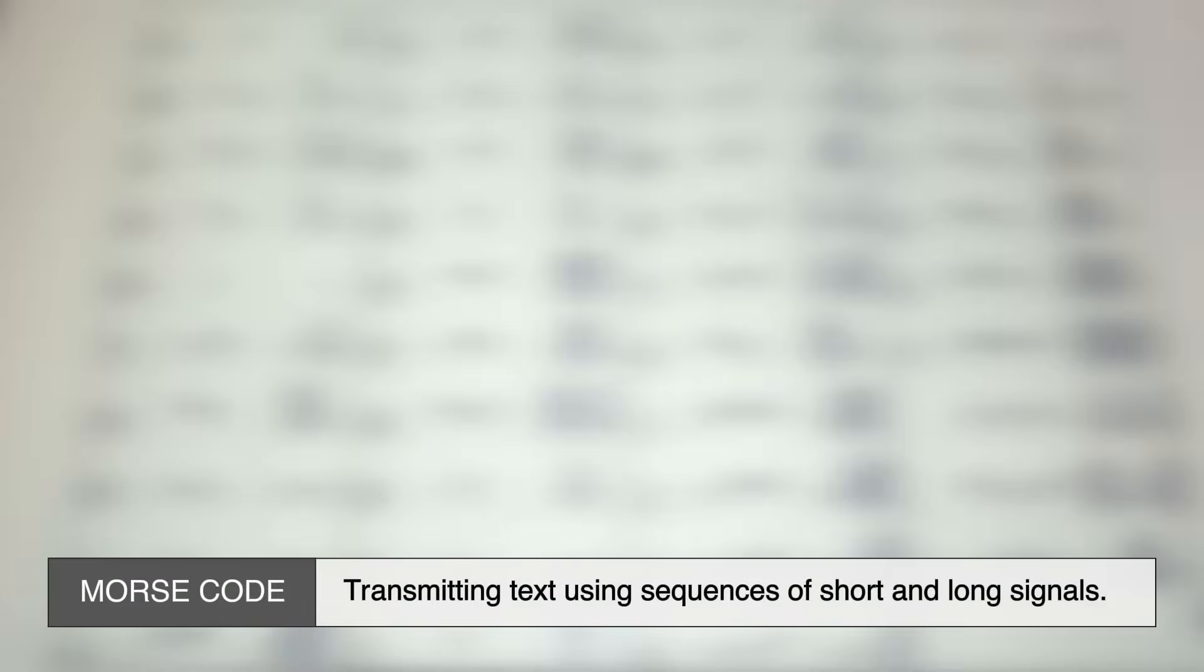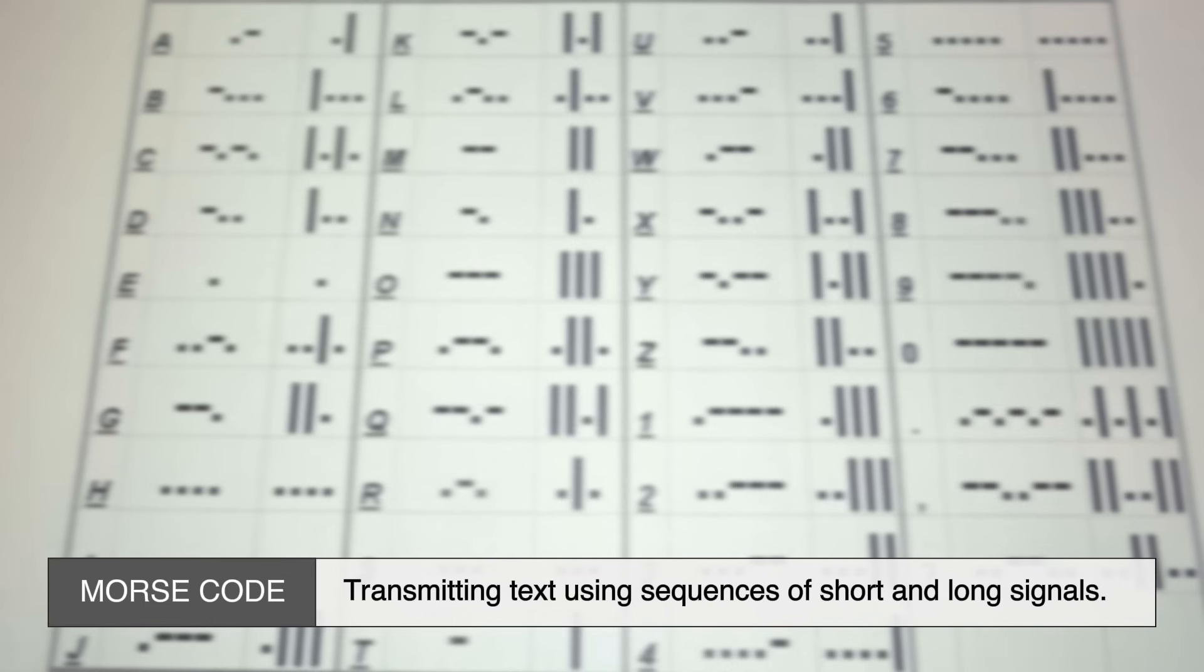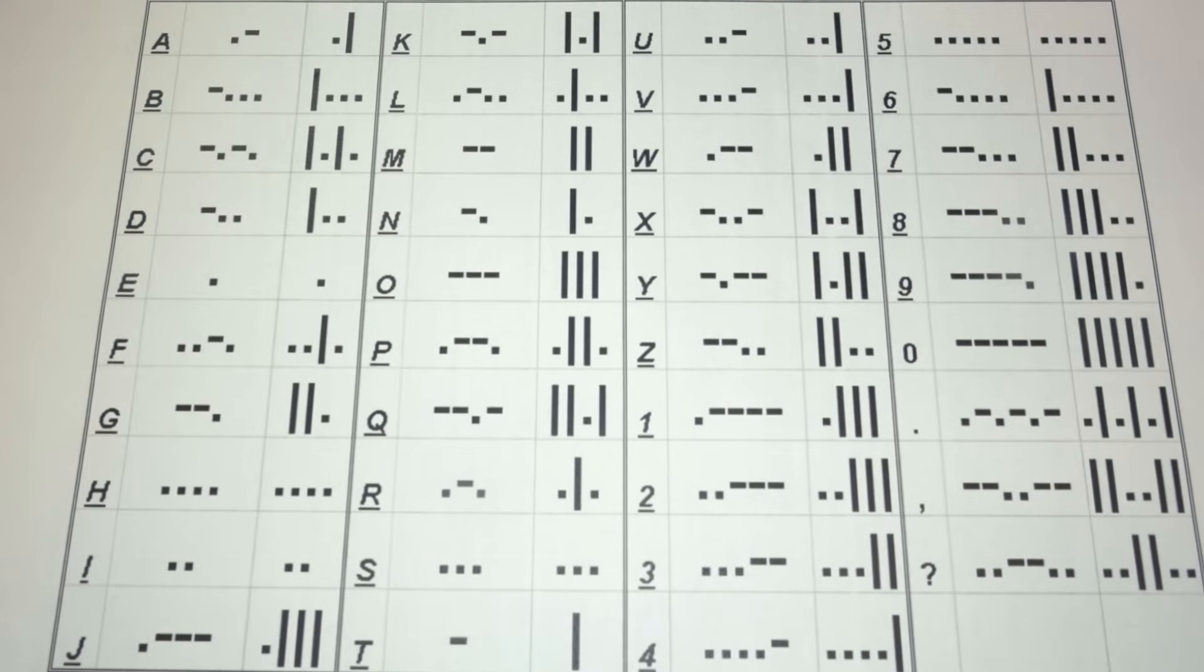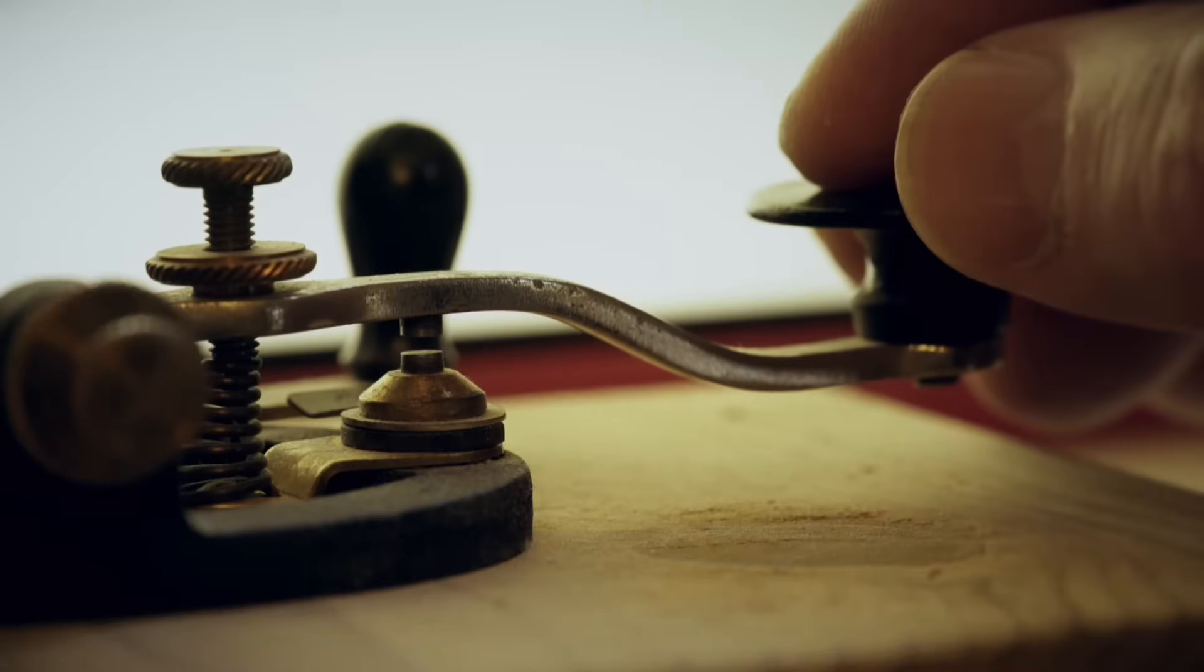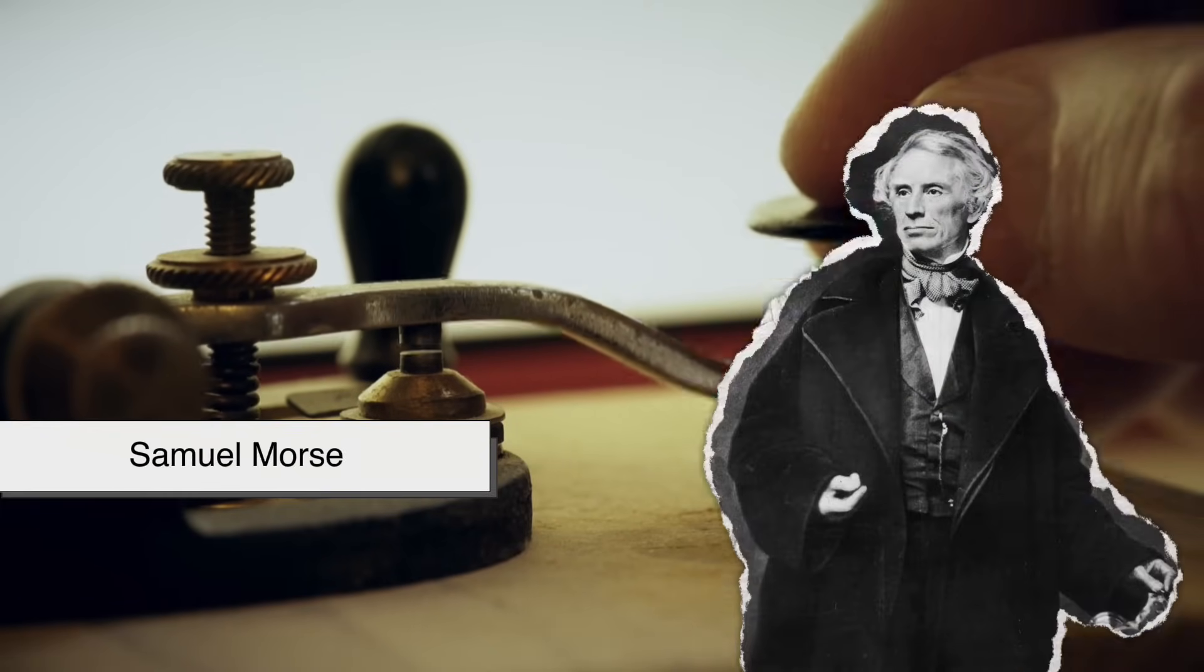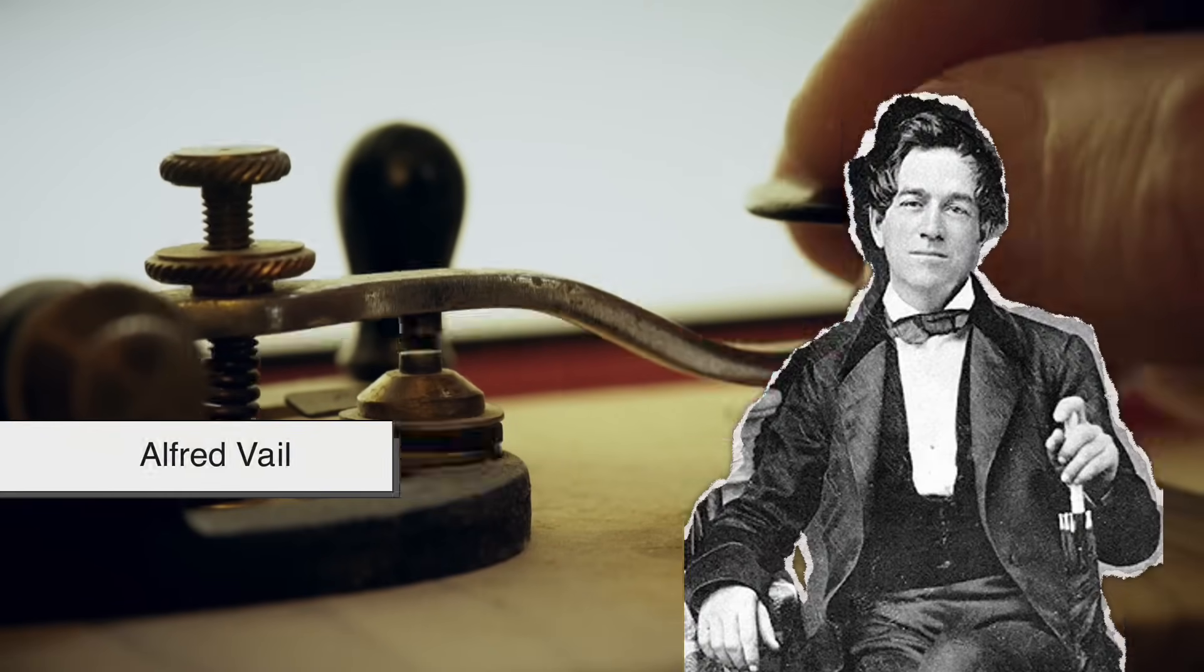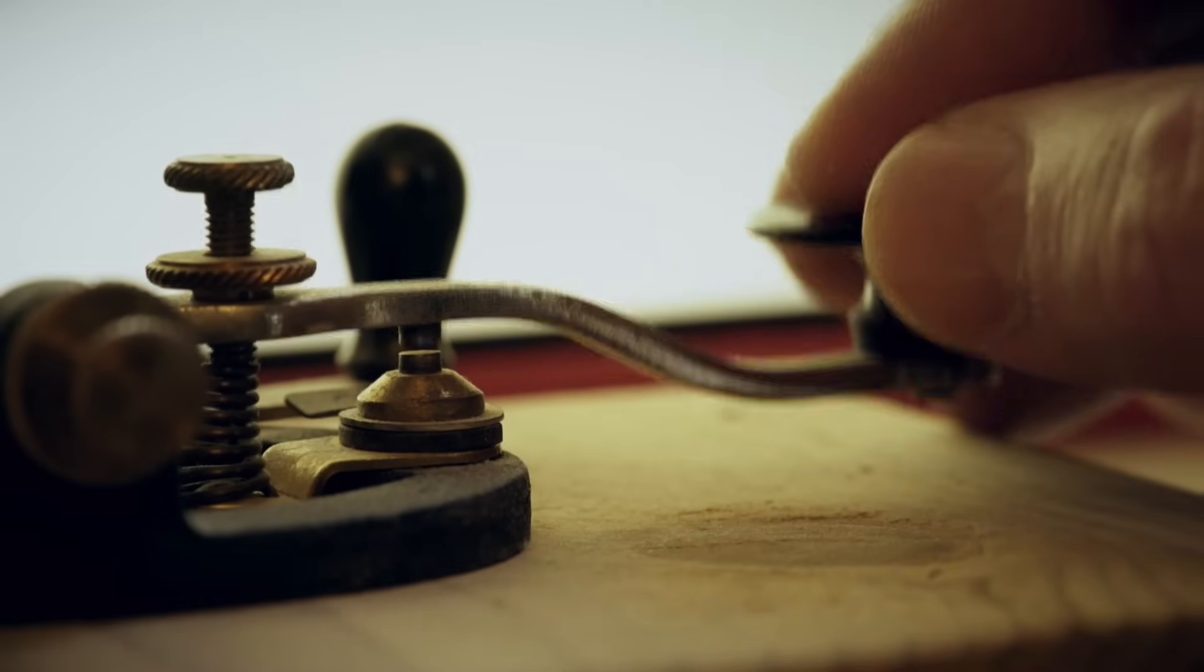Morse code is a method of transmitting text using sequences of short and long signals. These signals, known as dots and dashes, represent letters, numbers, and punctuation. It was developed in the early 1830s by Samuel Morse and Alfred Vale as a way to communicate through the telegraph.